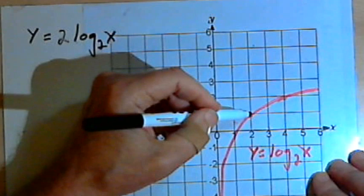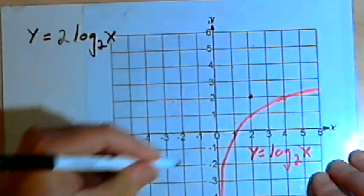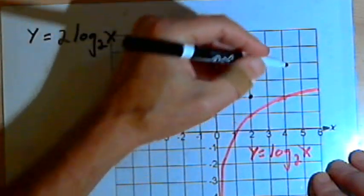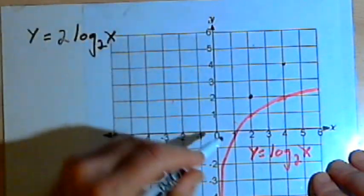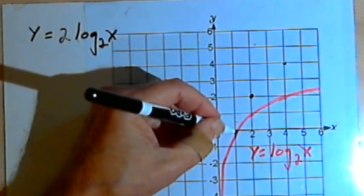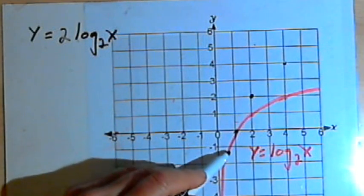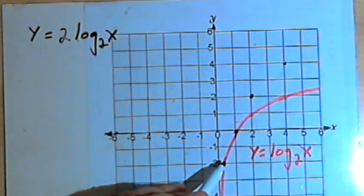So this point that I have here at (2,1) would become (2,2). The point at (4,2) would be (4,4). The x-intercept is going to stay the same since the y-coordinate there is 0, and 2 times 0 is still 0. I could take the negative coordinates that I have.